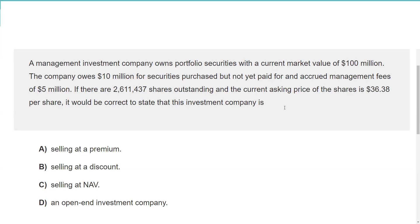If it's selling at the NAV, it could be a no-load open-end fund or perhaps a closed-end fund that coincidentally is trading at the NAV. An open-end investment company continually offers new shares, and the NAV plus the sales charge equals the public offering price. For a no-load fund, NAV plus zero means the NAV and POP are the same.